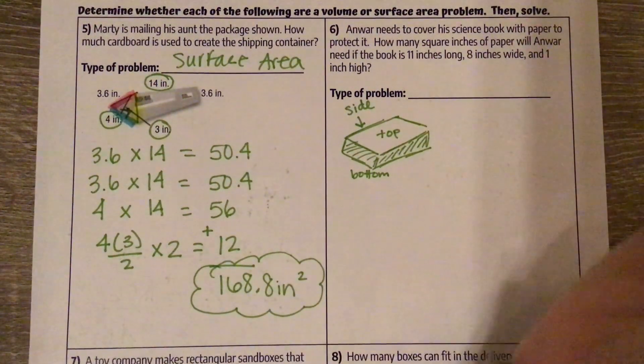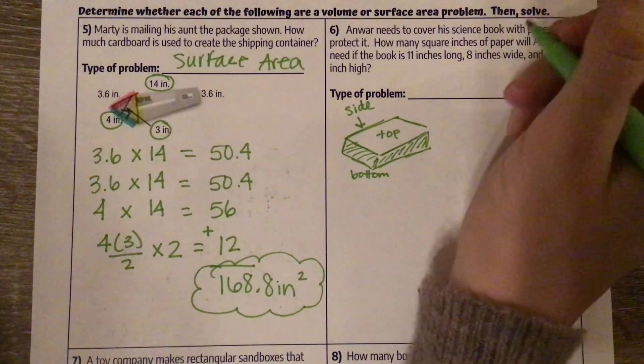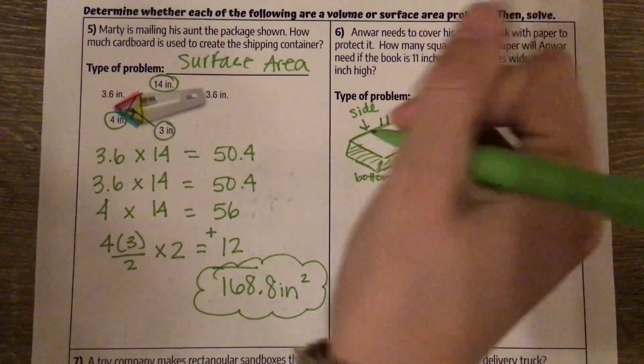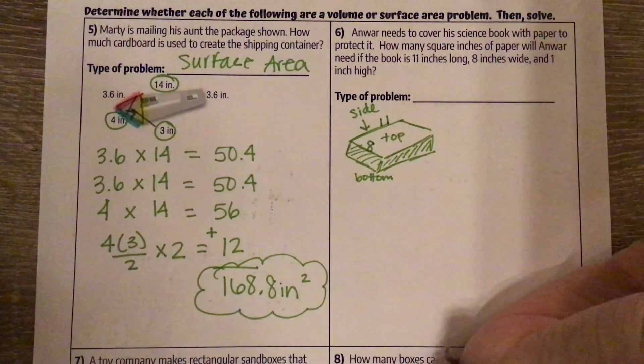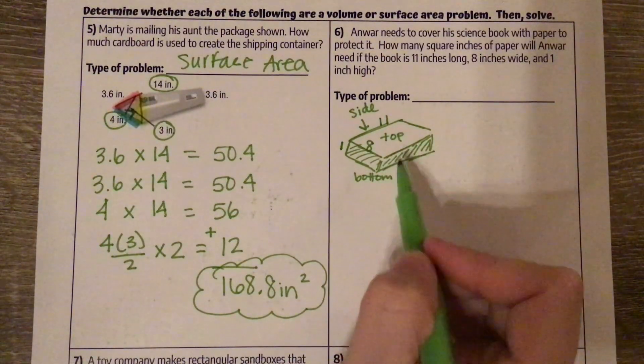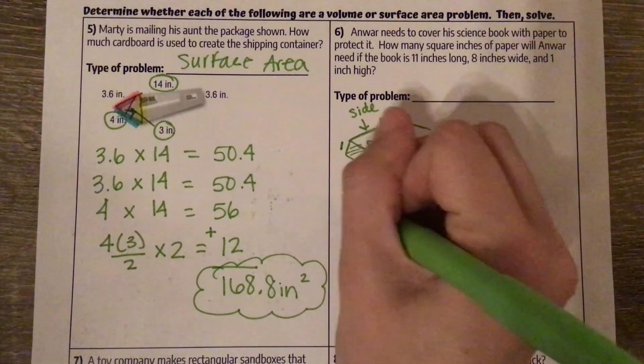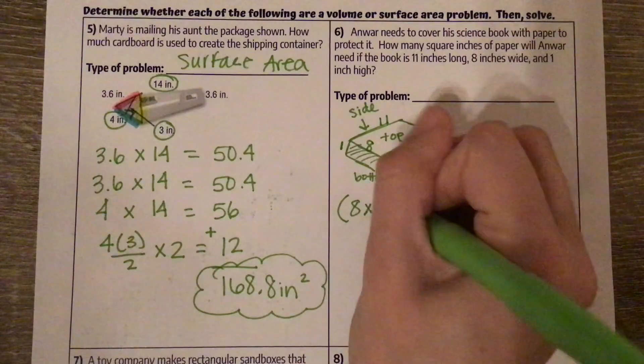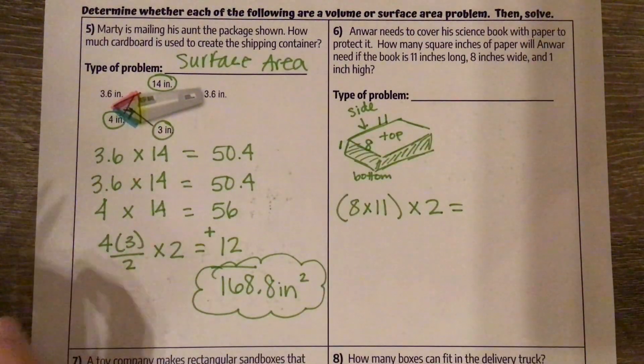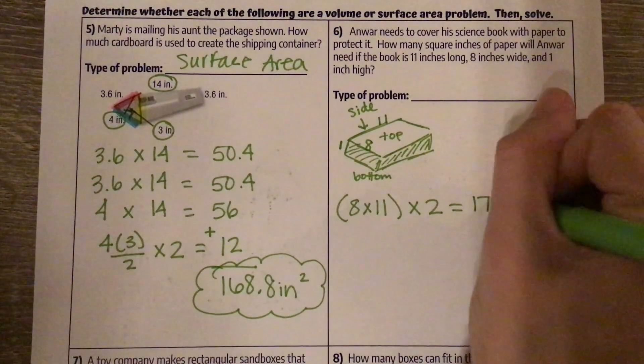When we're looking at our dimensions, we have 11 inches long, 8 inches wide, and 1 inch high. So the top and the bottom are the same. They are 8 by 11. So we're doing 8 by 11, and we're doubling it, which is 176.